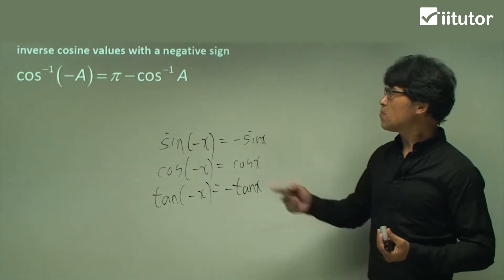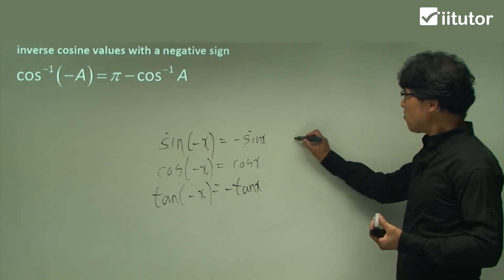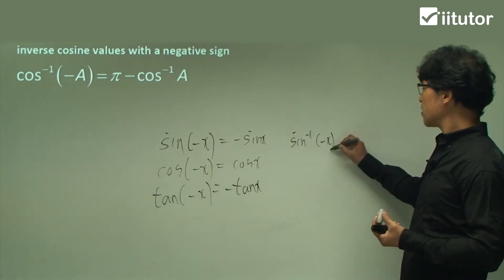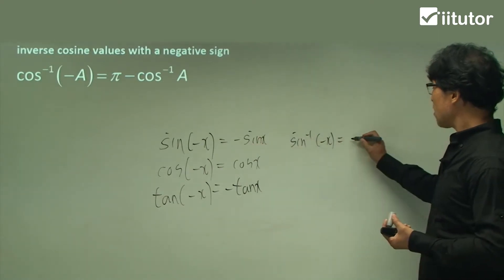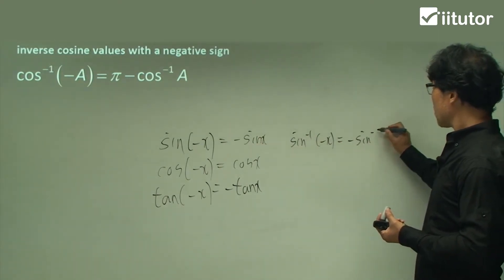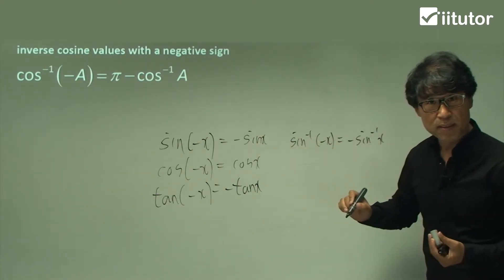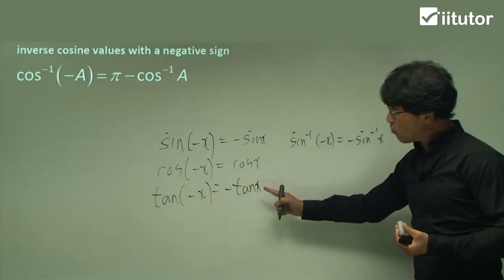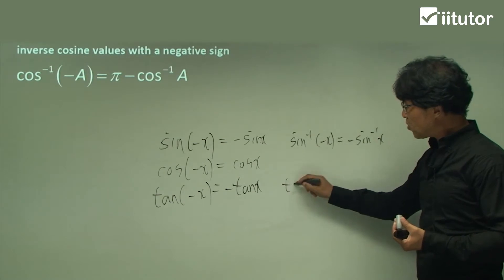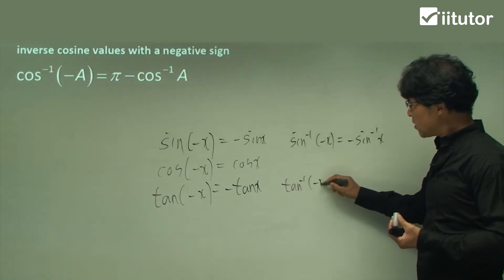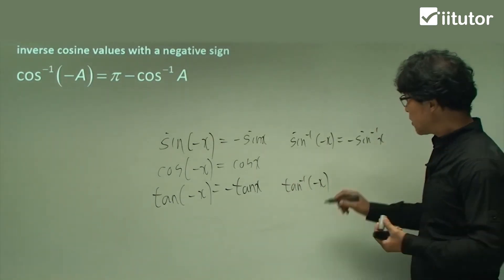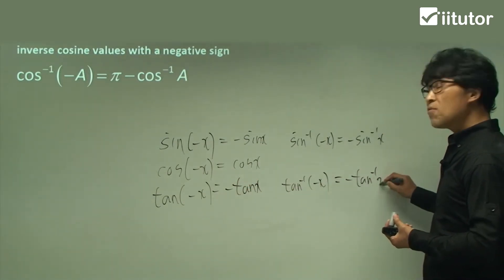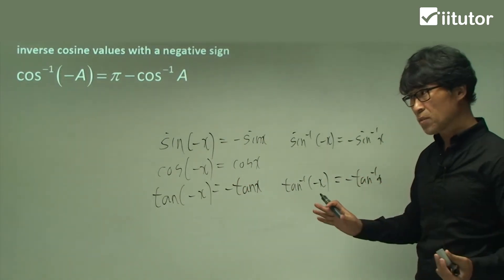In terms of inverse functions, if you do inverse sine of negative x, you can easily say it will be negative inverse sine of positive x. We'll talk about it a little later. For inverse tangent of negative x, it's simply negative inverse tangent of x. It's as simple as that.